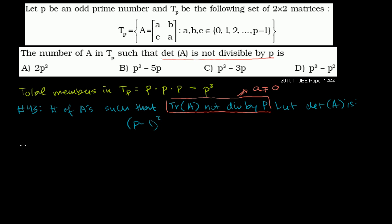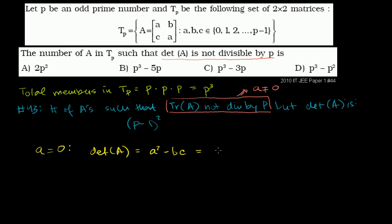So if we want to count all of them, we also have to count the ones where a does equal 0. We can figure out how many matrices there are where a equals 0 and the determinant of A is divisible by p, add it to our previous count, and then subtract from the total. So let's think about what the determinant looks like in this situation. The determinant of our matrix is a squared minus bc. Now if a equals 0, it becomes negative bc, and we need this to be divisible by p — equal to some multiple of p.